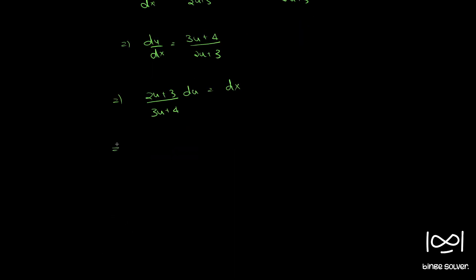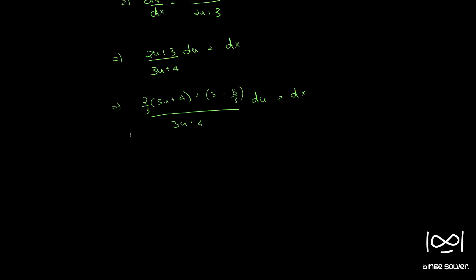Now making this into a proper fraction: we need a factor of 3, so we write 2 by 3 times 3u plus 4, plus 3 minus 2 by 3 into 4, which gives 8 by 3. So the expression becomes 2 by 3 plus 8 by 3 over 3u plus 4, all du equal to dx. Expanding, we get 2 by 3 plus 9 minus 8 is 1, so 1 by 3 times 1 over 3u plus 4.